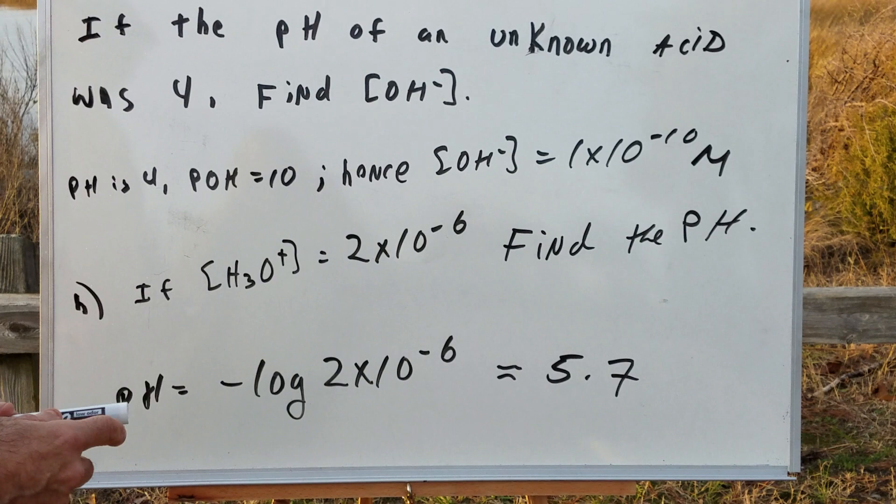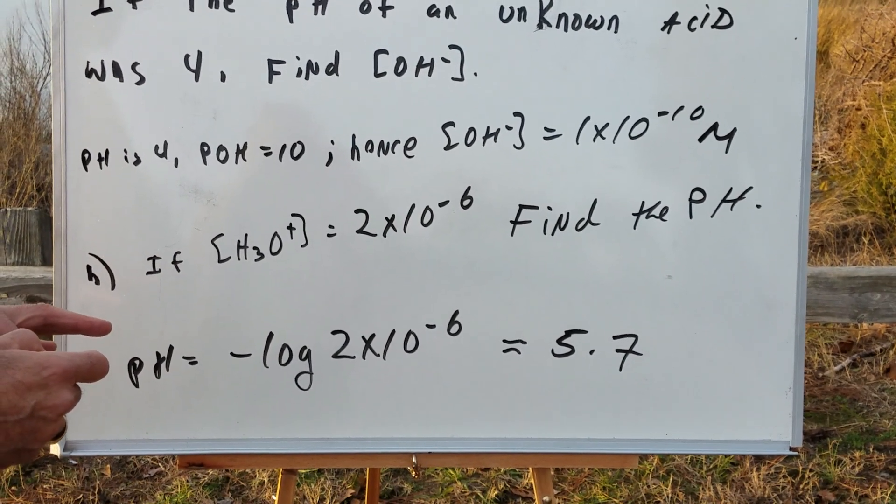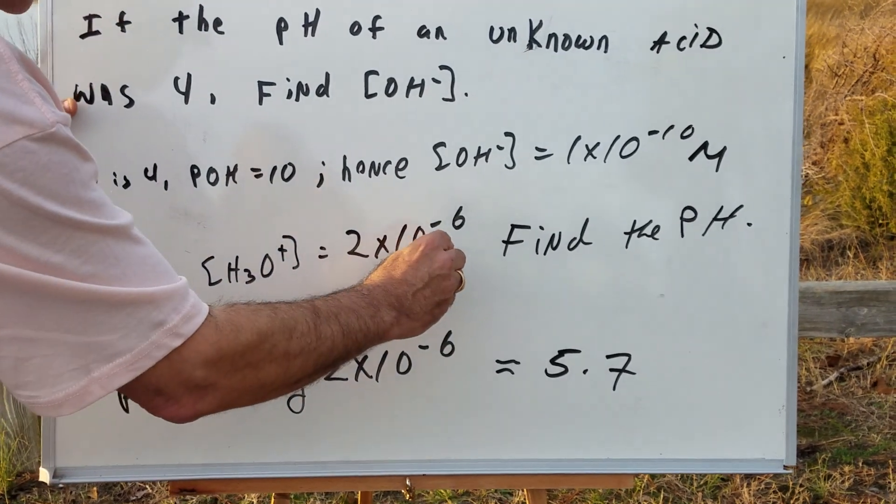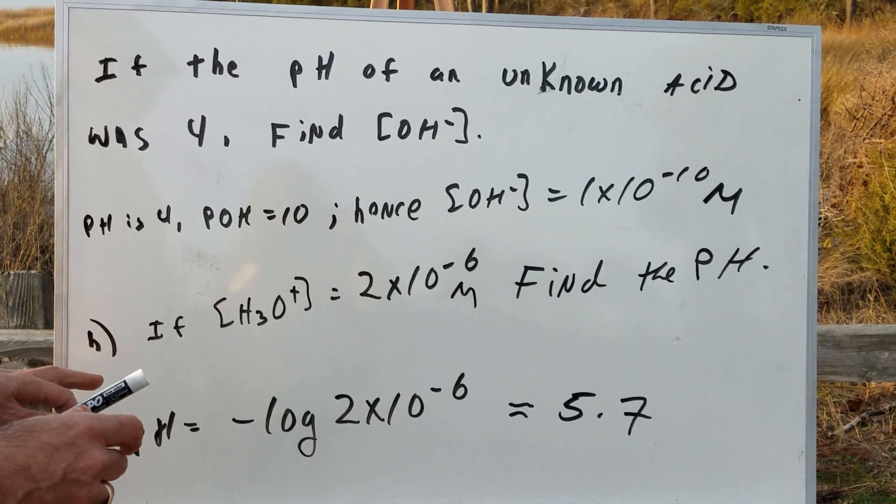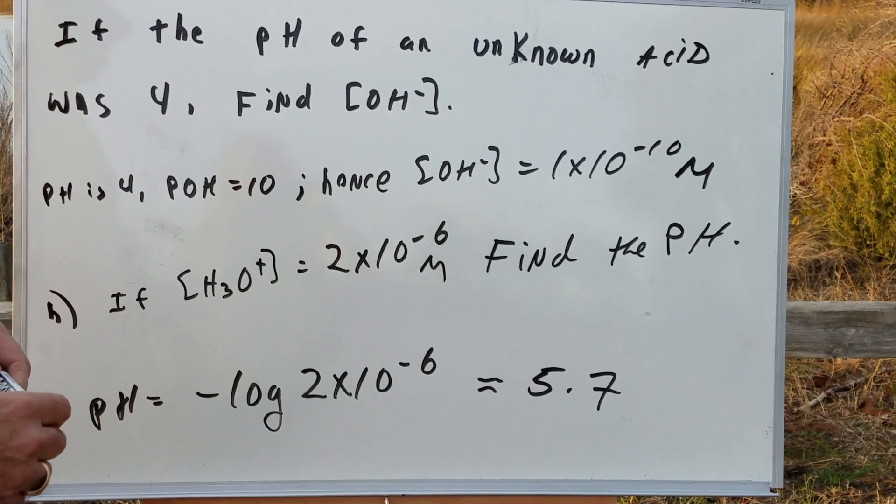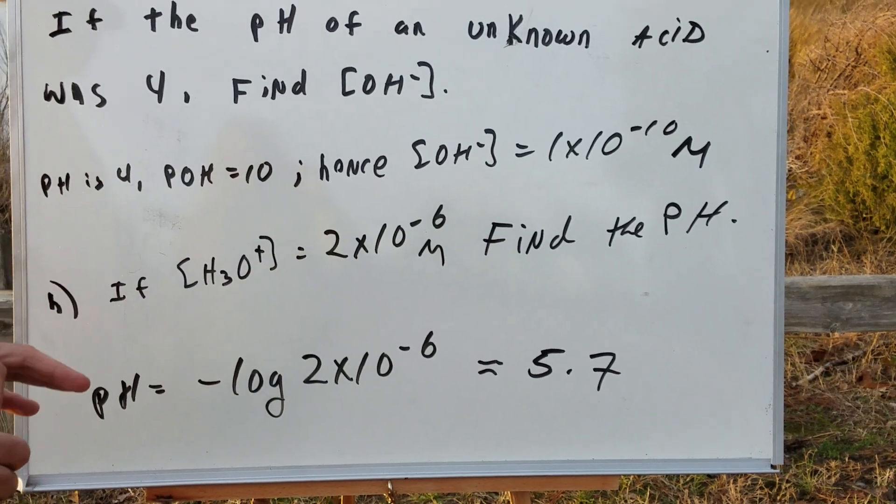Part B, if the hydronium concentration is 2 times 10 to the minus 6th molar, find the pH. Now, we all know pH is minus the log of the hydronium ion concentration. So minus the log of 2 times 10 to the minus 6th.